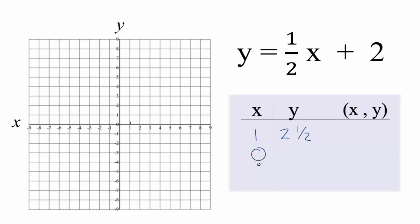If we put zero in, one half times zero, that's zero. So we have just two. And then let's put negative one. We have negative one, one half times negative one, that's negative one half plus two, we have one and one half.